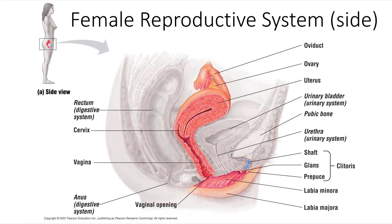Here in a side view of the female reproductive system, we can again see the shape of the uterus and the connection between the uterus and the vagina. One aspect of female reproductive anatomy to point out is that the urethra — the connection between the urinary bladder and the outside of the body — is entirely distinct from the vagina. When we observe the male reproductive system, we will see that the urethra is shared between the urinary system and the reproductive system.